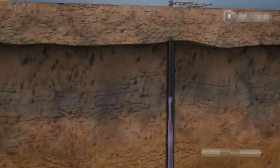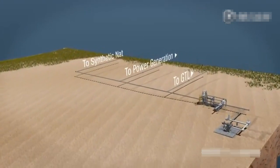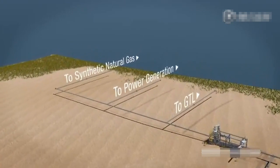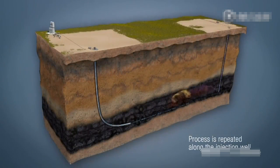Syngas is piped to a nearby plant for conversion into liquid fuels such as diesel and jet fuel, synthetic natural gas, chemicals or power production. The process is repeated along the length of the injection well, converting all the coal in the vicinity of the well into syngas.